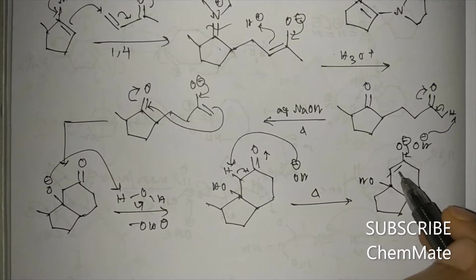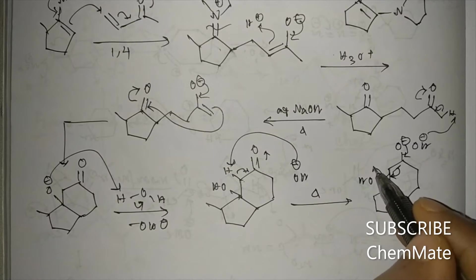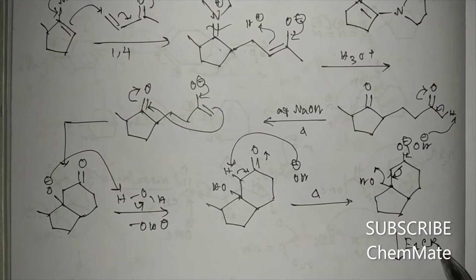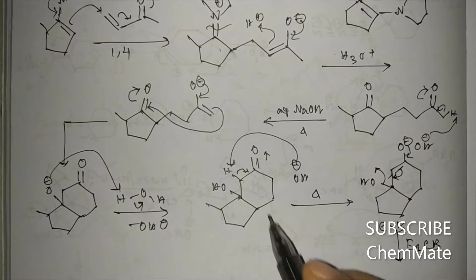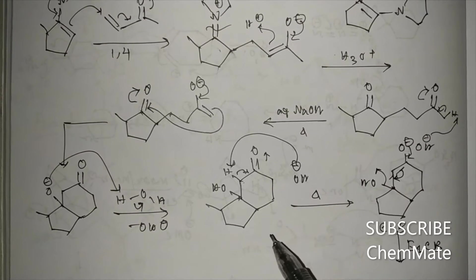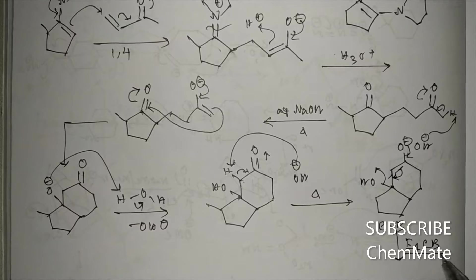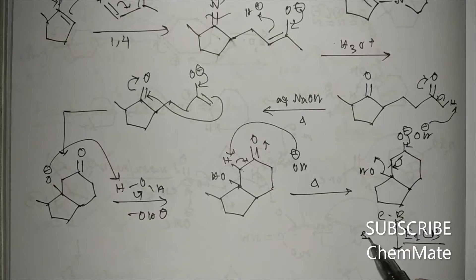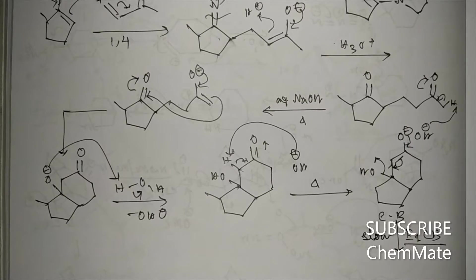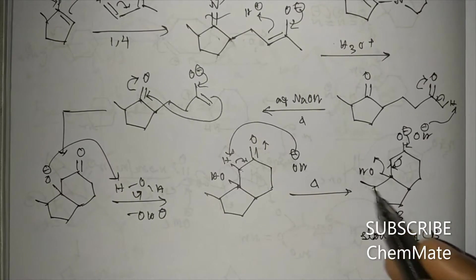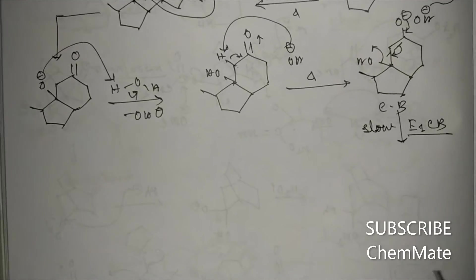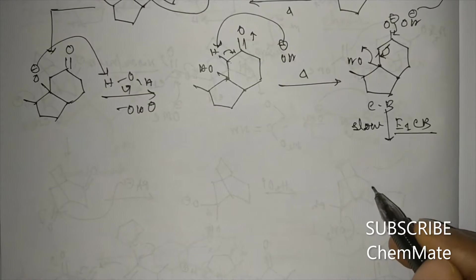On heating, hydroxide abstracts a proton and dehydration takes place via the E1CB mechanism — elimination via the conjugate base. The conjugate base is the slow step. When OH minus is eliminated, we get an alpha-beta unsaturated carbonyl compound.